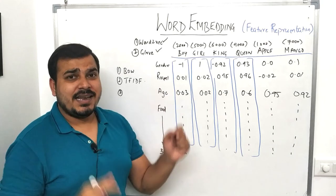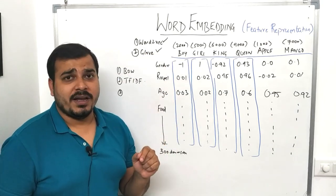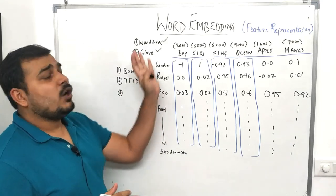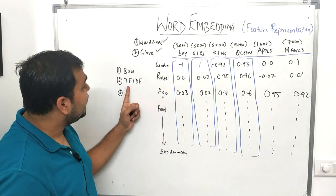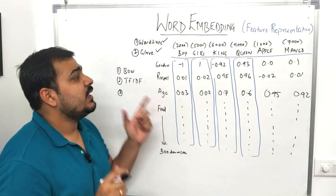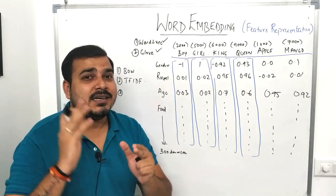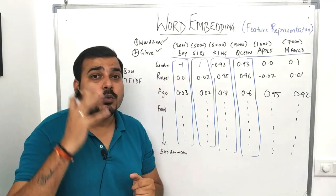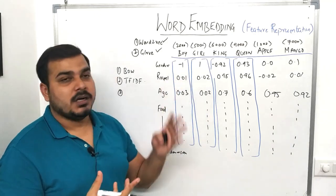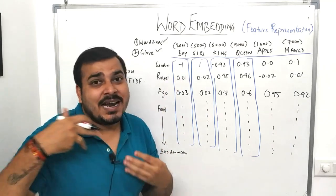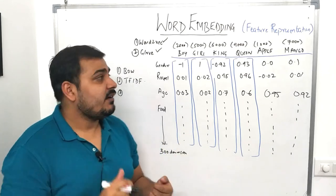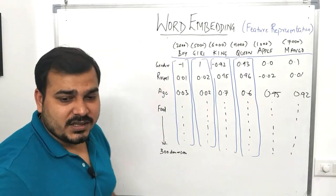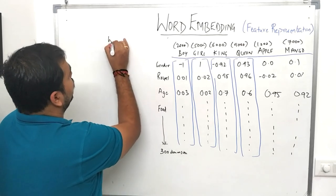In word embedding I have two techniques: Word2Vec and GloVe. I'll be covering both in the NLP playlist. Let's understand what exactly the embedding technique is and how we overcome the disadvantages of TF-IDF. The most important thing in NLP is text pre-processing — converting text data into some vector representation so that the algorithm can generalize words to make predictions, generate sentences, and more. Let's first understand some basic terms with respect to word representation.